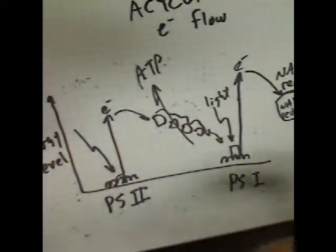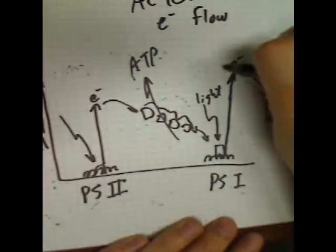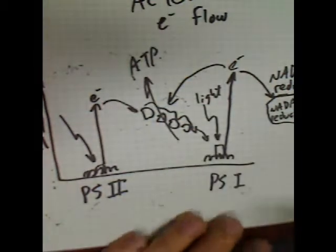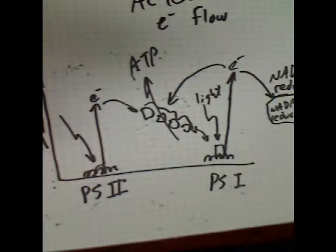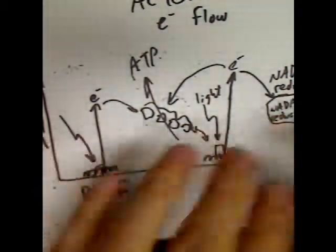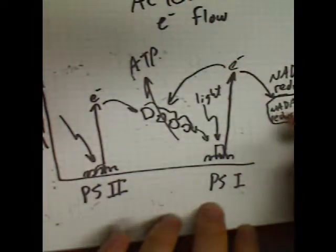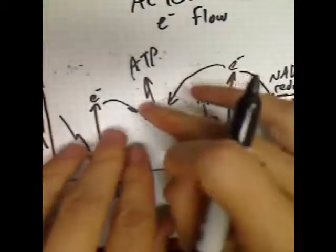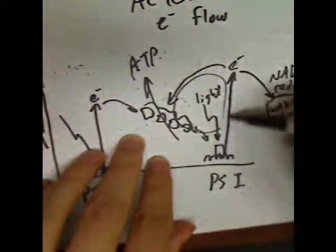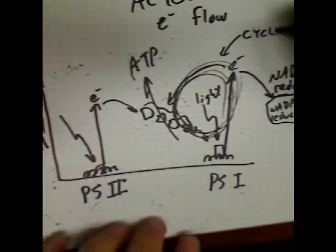There's something else that sometimes happens: the electron, instead of being passed on to NADP reductase, can actually be moved back into the electron transport chain to produce more ATP. This has to happen because, as you'll see in the next video when we talk about the carbon reactions, the Calvin cycle requires more ATP than NADPH. So the light reactions that make ATP and NADPH have to be rigged to make more ATP, and this is how it's done. Sometimes the electron from photosystem I gets excited and passed to NADP reductase — that's acyclic flow. But sometimes it gets passed back to the electron transport chain to make more ATP. You can see that that kind of is cyclic, because you could imagine an electron just being passed around and around in this little loop forever. So that would be called cyclic electron flow.